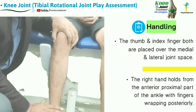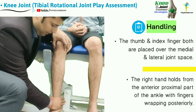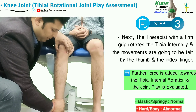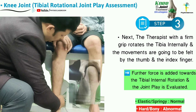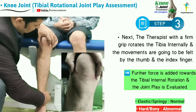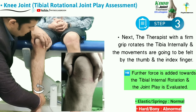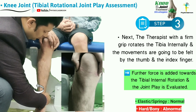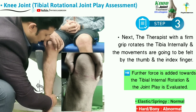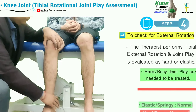The right hand of the therapist holds the anterior proximal part of the ankle with the fingers wrapping posteriorly. With a firm grip, the therapist rotates the tibia internally, and the movement is felt by the thumb and index finger. Without loosening this tension, further force is added and the joint play is assessed as either springy or hard.